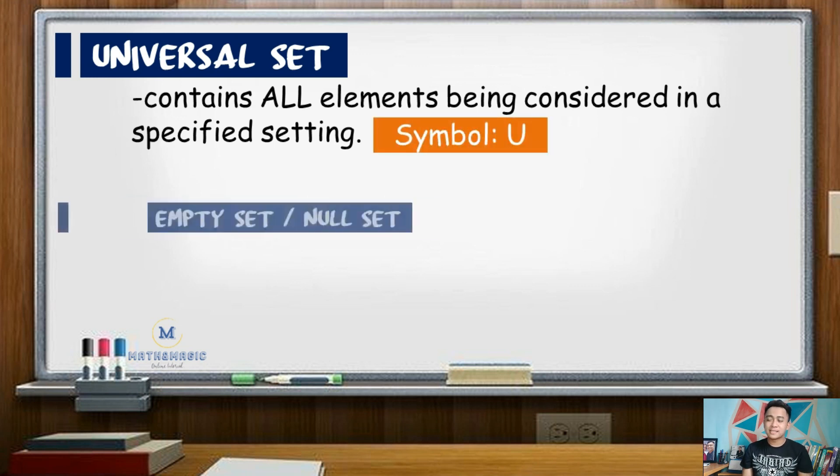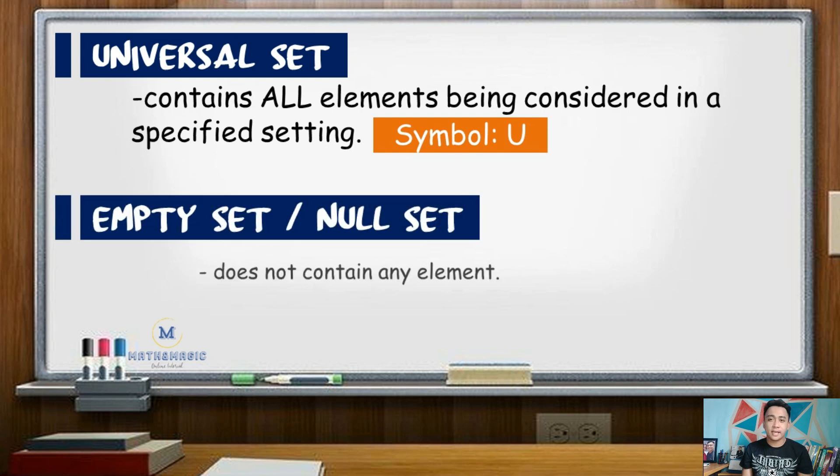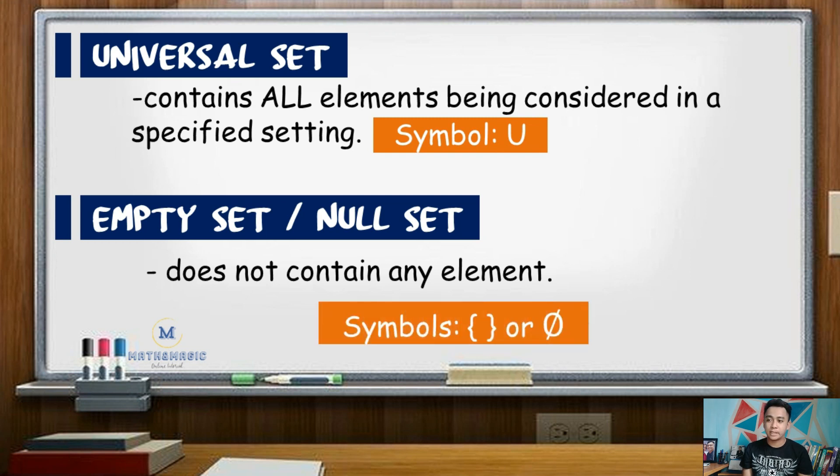Meanwhile, the set that does not contain any element is called the empty set or the null set. These are the two symbols that were commonly used to denote a null set. We have braces with no elements in between, and the symbol for null.